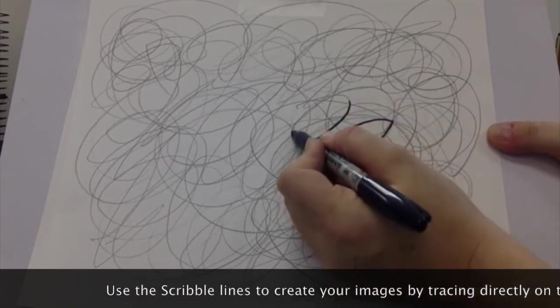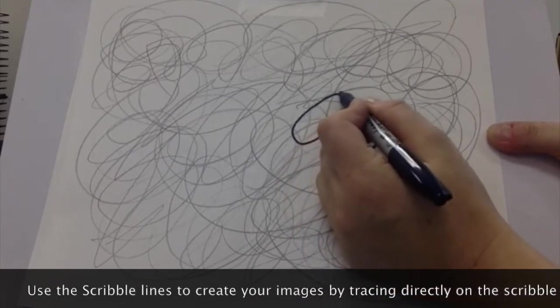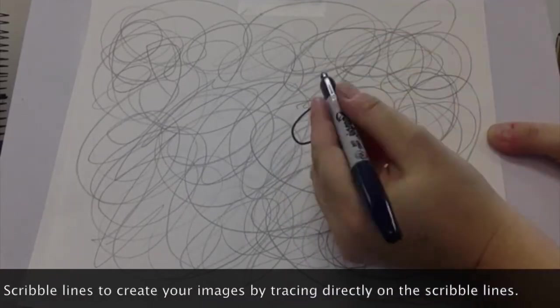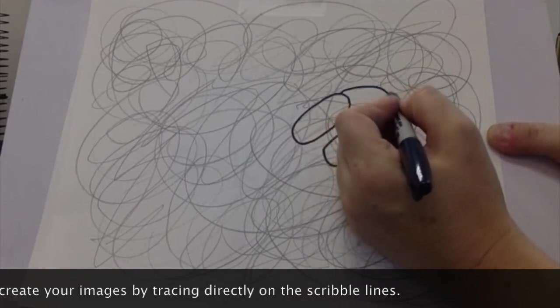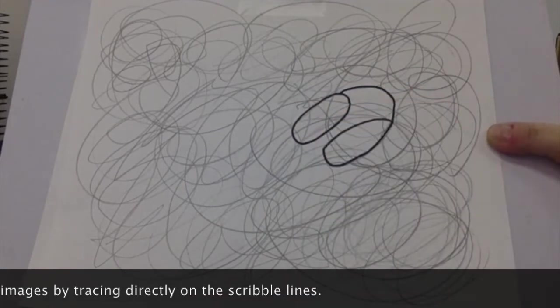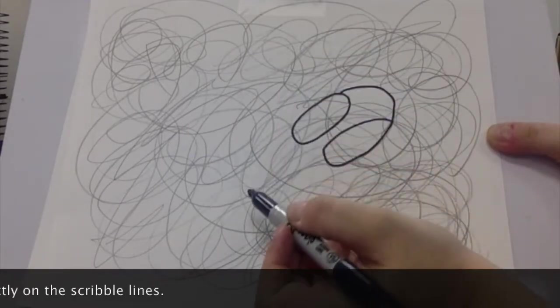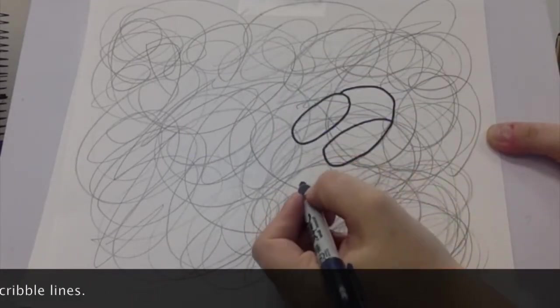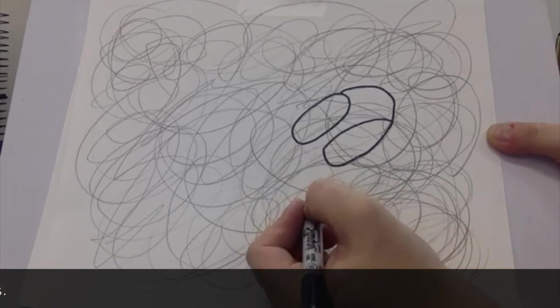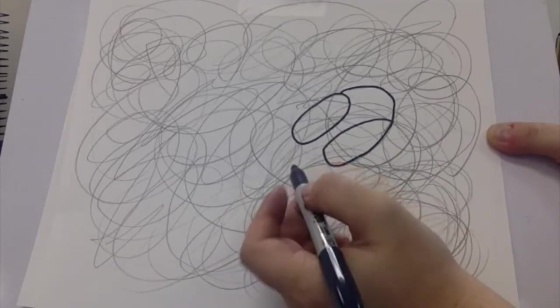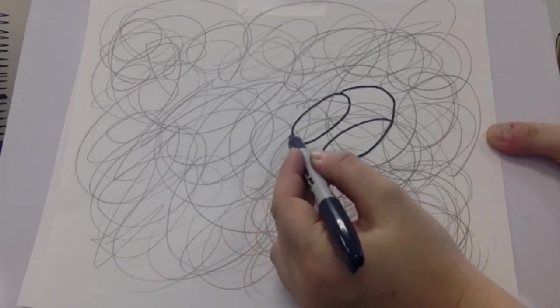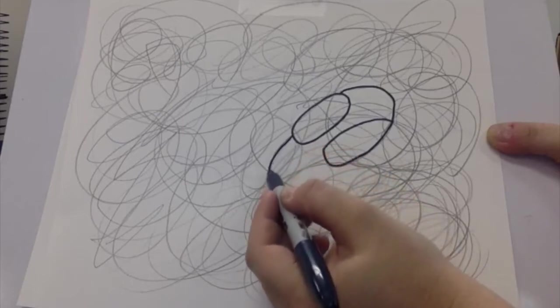All I'm doing is tracing right on top of the scribble line with a permanent marker. And then this is the top of a head. And then I see this. Let's see, I see a bunch of lines that could be the bottom of a chin. I like this one. I like this one the best.